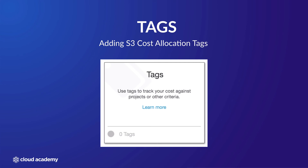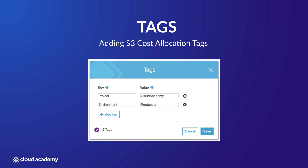To add tags to your bucket, select your bucket and then from the Properties tab, select Tags. Select the tile, configure your tags as required, and click Save.